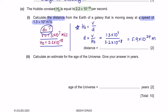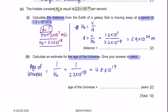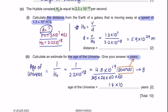Part 2: Calculate an estimate for the age of the universe and give your answer in years. The age of the universe = 1 ÷ H₀. Remember the answer is in seconds, so convert to years by dividing by 365 days × 24 hours × 60 minutes × 60 seconds. This gives a value of 1.4 × 10¹⁰ years.